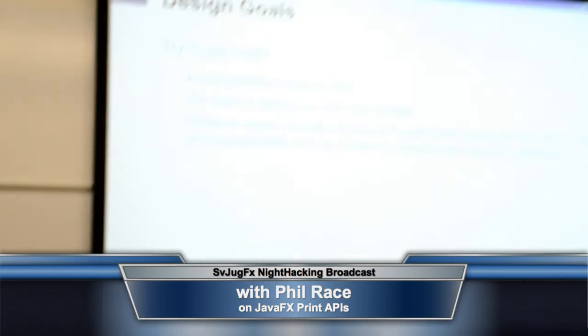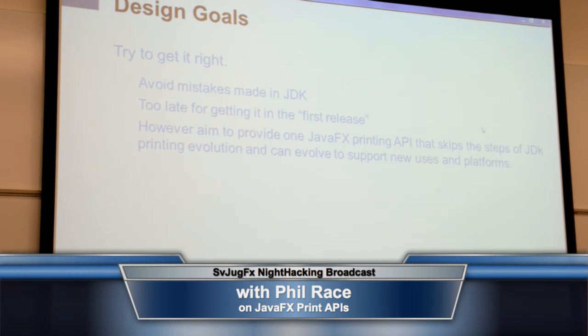It's too late to get it in the first release, but feedback is obviously very important here. The goal is to only have to provide one API. This doesn't mean the API is complete or won't evolve, but the worst thing that can happen is having to say we need a completely different API. In JDK 1.1 we had a PrintJob, in 1.2 a PrinterJob, then a Java X Print PrintJob in 1.4 — all completely different. So let's hope we can get this right, and that as we evolve to new uses and platforms it's flexible enough to survive.